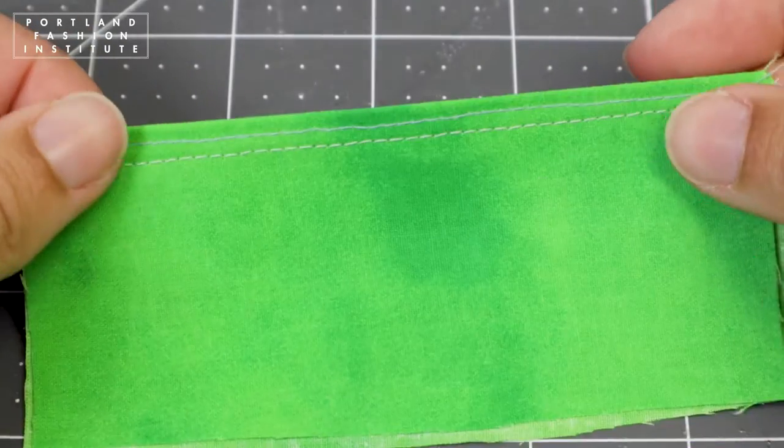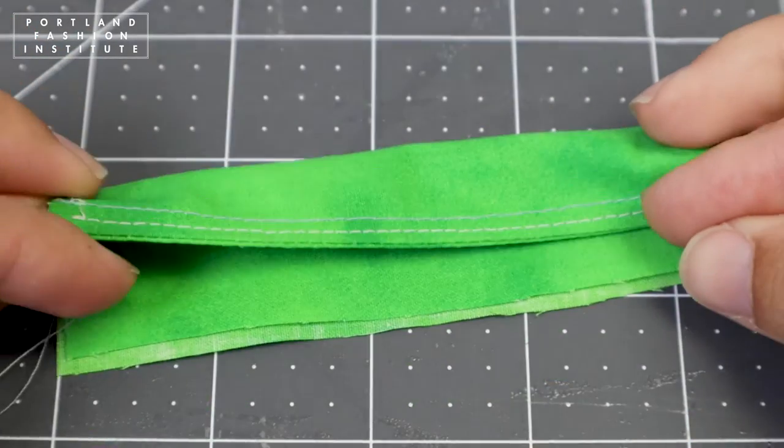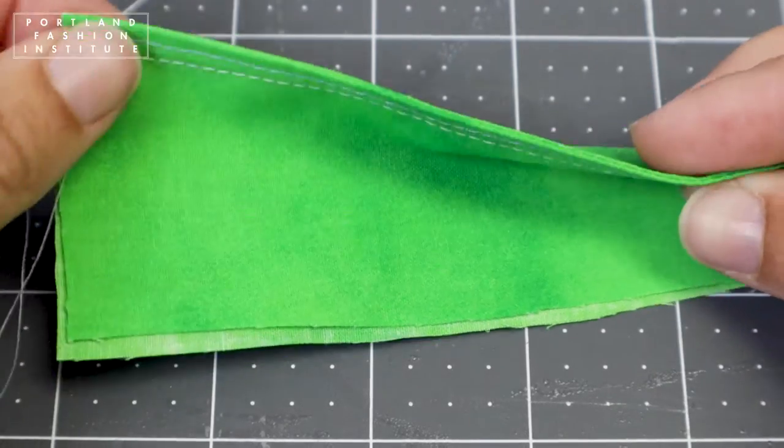An edge stitch is used to reinforce edges and attach pockets. Top stitching adds extra strength and a sporty feel.